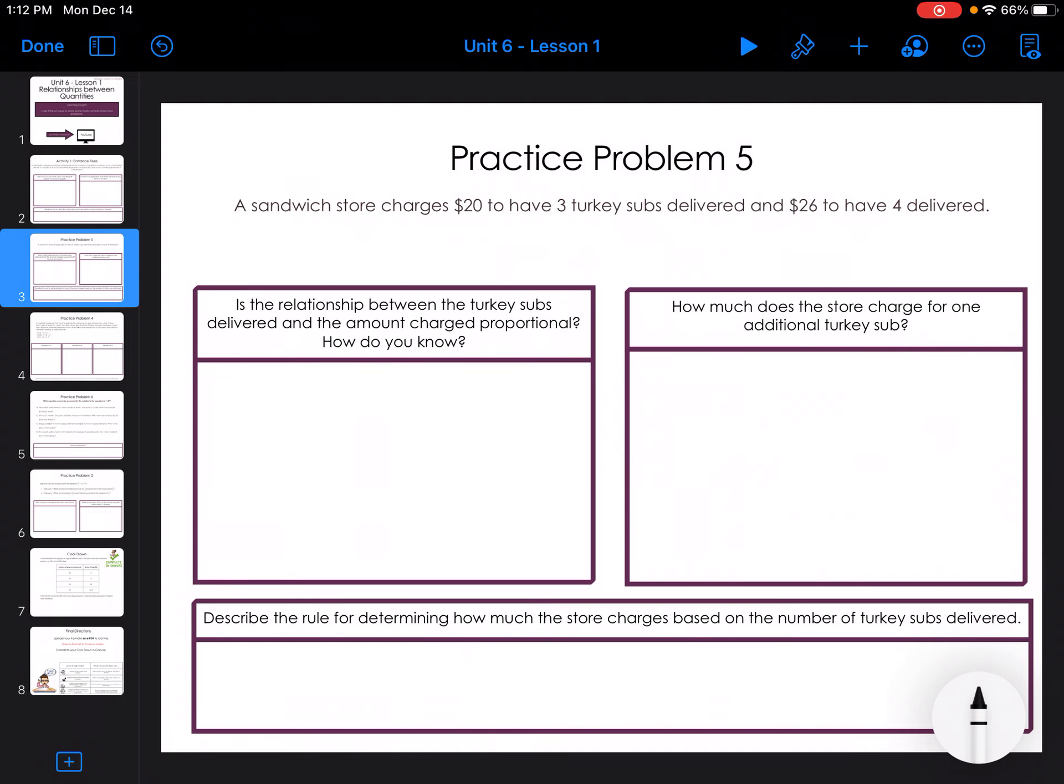A sandwich store charges $20 to have three turkey subs delivered and $26 to have four delivered. They want to know if this is proportional. So four divided by three would give me 1.3 repeating. Is 20 times 1.3 repeating 26? No, it does not equal $26.